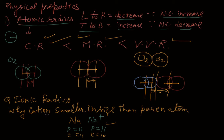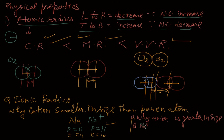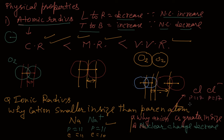The second question: why is an anion greater in size than the parent atom? The answer is that nuclear charge effectively decreases. Take the example of chlorine and chloride ion (Cl-). Protons are 17 in both. Electrons in chlorine are 17, but in the chloride ion electrons are 18. So nuclear charge per electron decreases and the size of the anion is greater. This is what atomic radius and the different types of radii are.